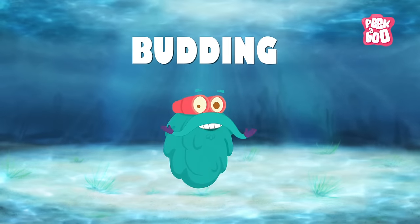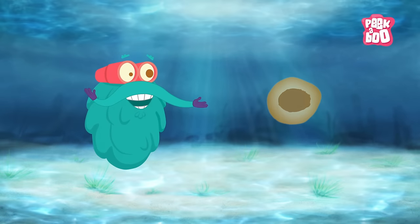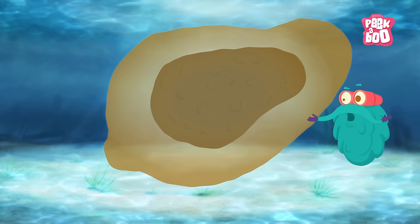Budding. Some bacteria like yeast use budding as their form of reproduction. A small growth appears on the body of the parent, which grows with time.